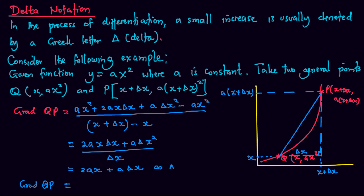So that gradient QP, as delta x turns to zero, the second expression disappears and we end up with gradient QP equal to 2Ax.